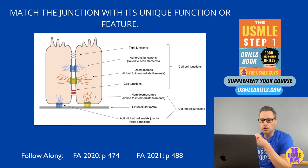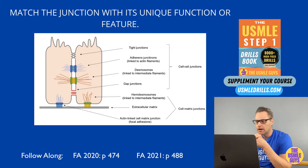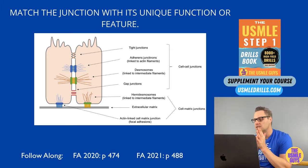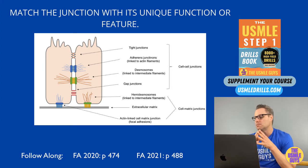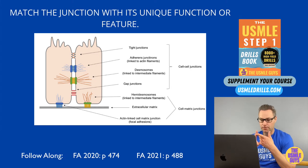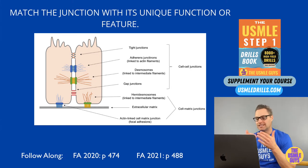The desmosomes, also known as macula adherens, provide structural support through intermediate filament interactions. This is an important structure because if we have an autoantibody to desmoglein 1 and/or 3, it can lead to pemphigus vulgaris, which is a chronic skin blistering condition.